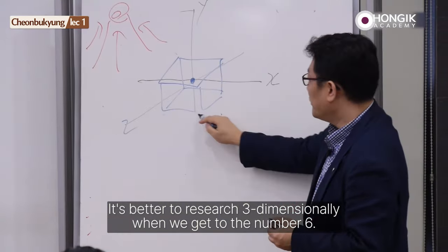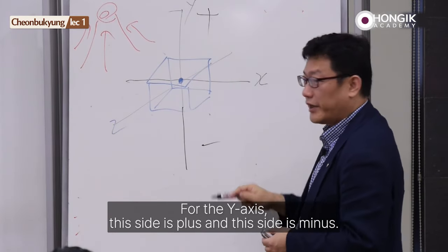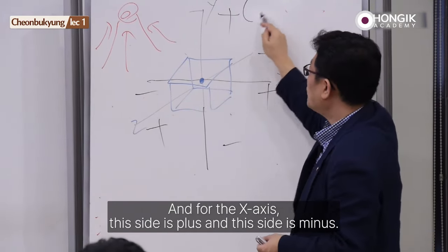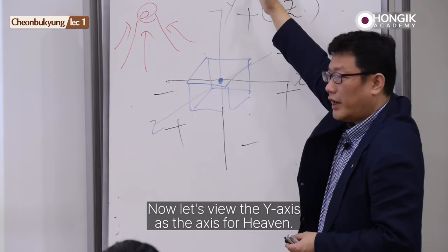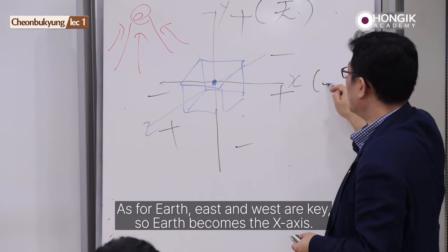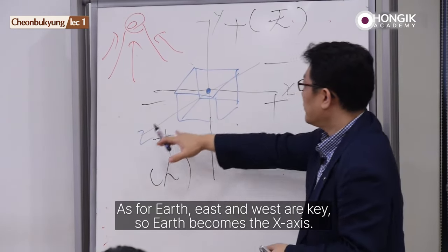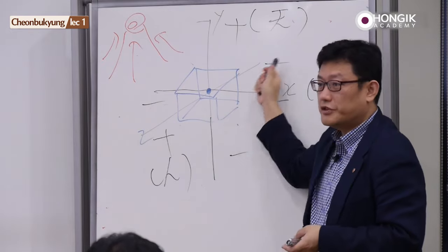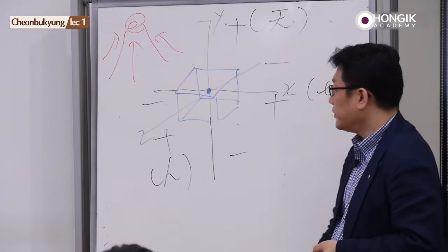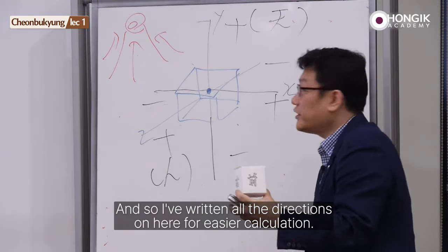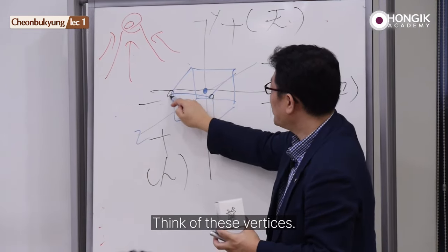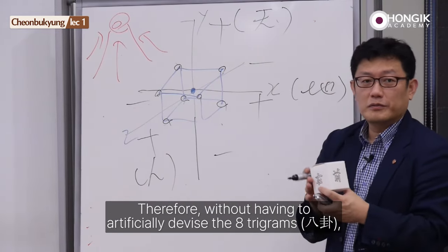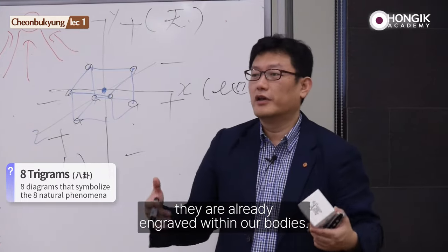It's better to research three-dimensionally when we get to the number six. For the y-axis, this side is plus and this side is minus. For the z-axis, this side is plus and this side is minus. And for the x-axis, this side is plus and this side is minus. Now let's view the y-axis as the axis for heaven — above and below are key for heaven. As for earth, east and west are key, so earth becomes the x-axis. And lastly, moving from past to present to future, man continuously sculpts this space of heaven and earth. We get eight vertices from this shape. Therefore, without having to artificially devise the eight trigrams, they are already engraved within our bodies.